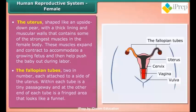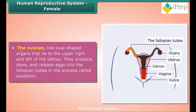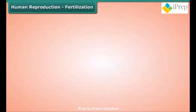The fallopian tubes, two in number, are each attached to a side of the uterus. Within each tube is a tiny passageway, and at the other end is a fringed area that looks like a funnel. The ovaries are two oval-shaped organs that lie to the upper right and left of the uterus; they produce, store, and release eggs into the fallopian tubes in the process called ovulation.